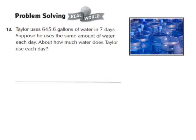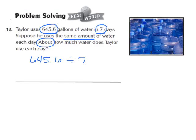Let's look at question number 13, our first real-world problem. It says: Taylor uses 645 and 6 tenths gallons of water in 7 days. Suppose he uses the same amount each day — about how much water does Taylor use each day? We'll take 645 and 6 tenths gallons and divide by 7 days. Because they use the word 'about,' we know we need to estimate, so we'll use compatible numbers.